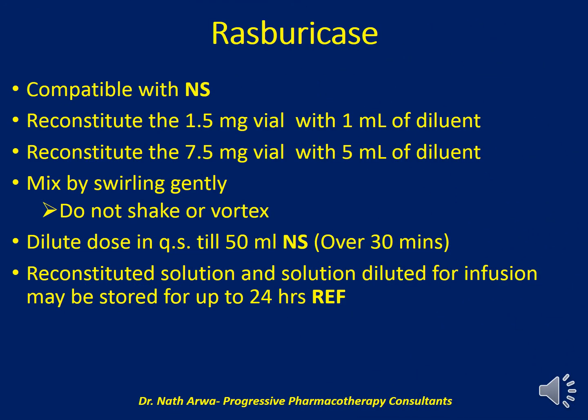Rasburicase is compatible with normal saline — avoid using 5% dextrose in water. We should reconstitute the 1.5 mg vials using 1 ml of the provided diluent, and the 7.5 mg vials using 5 ml of the diluent, by adding the fluid and gently swirling the vial. Literature emphasizes: do not shake, as the product would foam. After obtaining the solution, dilute it so that the final volume is 50 ml; withdraw from the bag a volume equivalent to the volume of rasburicase to be added.